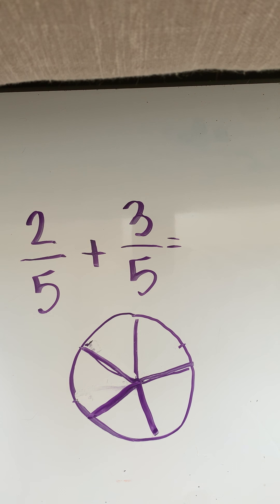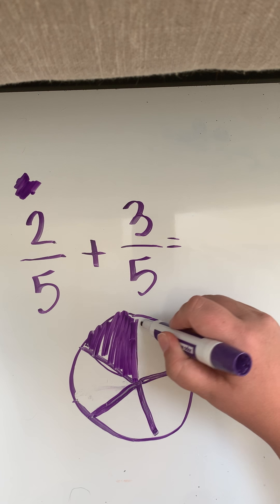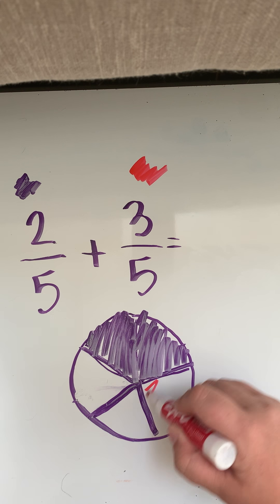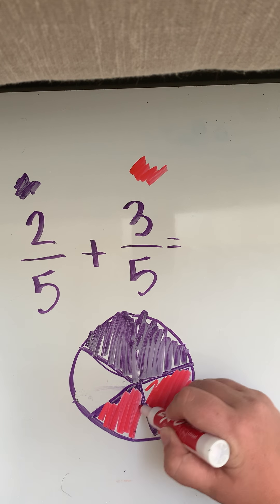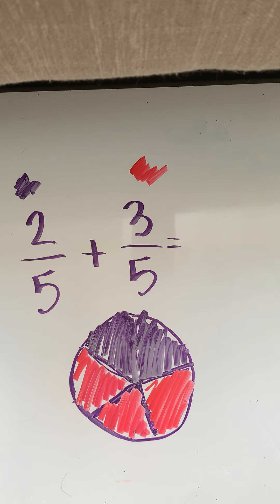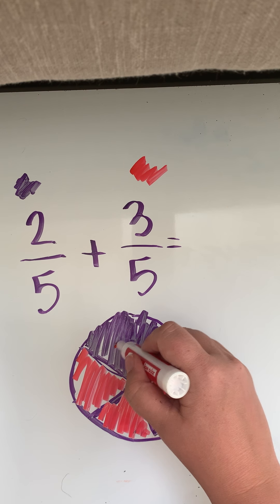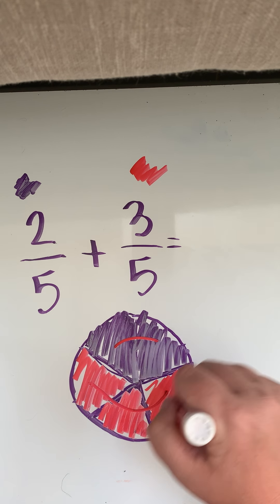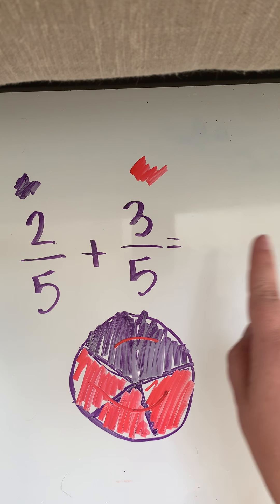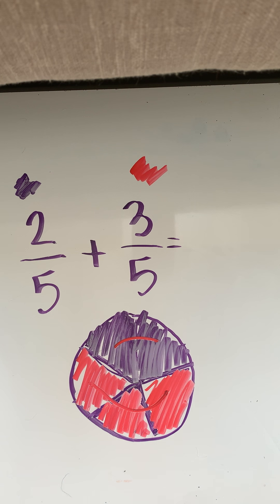So we have five equal pieces. If I have two-fifths shaded purple, watch: one, two, there's my two-fifths. Now I'm going to have my three-fifths and I'm going to shade those red: one, two, three. Do you see now that my whole circle is shaded in? So this shows you that two-fifths plus three-fifths equals one whole. Now I am going to show this to you guys. I do not expect you to know how to do this on your test tomorrow.